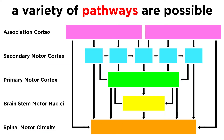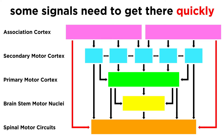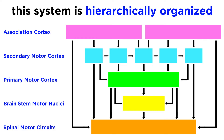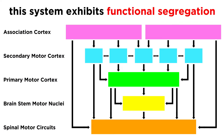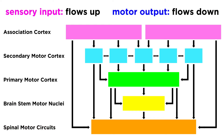Not all signals make it through all of these locations. Some make it to muscles without hitting every stop, and certain bodily functions rely on signals bypassing certain stops to initiate a rapid response. Nevertheless, we can say that the sensory motor system is hierarchically organized and in parallel fashion. We can also say that this system exhibits functional segregation, as each level performs a different function — making it very similar to the sensory systems, but instead of information flowing up, information flows down.